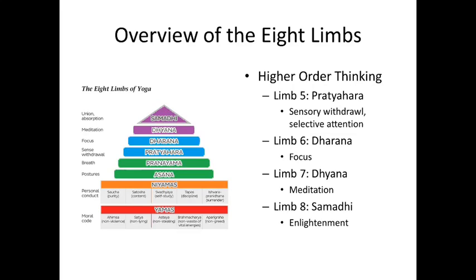Limbs five through eight I group together as the higher-order thinking limbs, where you move from the physical practice to the mental and spiritual practice of yoga. Don't get too hung up on the Sanskrit words here — I'll mostly use the English equivalents. Limb five is Pratyahara — sensory withdrawal or selective attention. Limb six is Dharana — focus. Limb seven is Dhyana — meditation. Limb eight is Samadhi — enlightenment. The boundaries between these limbs are much less clear than the first four, because it's a more mental and spiritual practice.